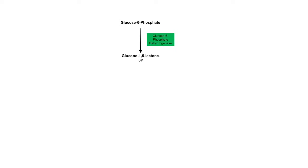So where does this all begin? The pathway actually begins near the start of glycolysis with glucose-6-phosphate. Instead of glucose-6-phosphate going down the glycolysis pathway, it gets shunted into another pathway by the enzyme glucose-6-phosphate dehydrogenase, which converts glucose-6-phosphate to glucono-1,5-lactone-6-phosphate. In doing so, it reduces NADP⁺ to NADPH. This step is the rate-limiting step of the pentose phosphate pathway, and NADPH — the product — actually inhibits the enzyme, while low levels of NADPH can activate it.